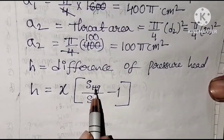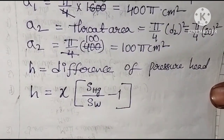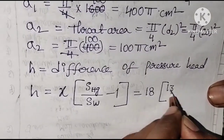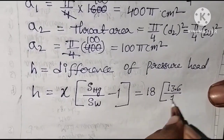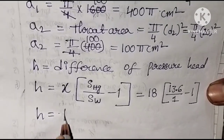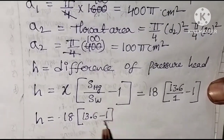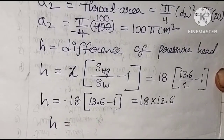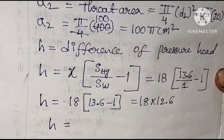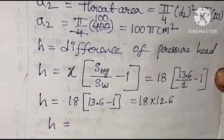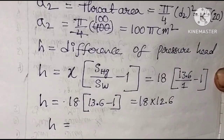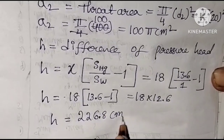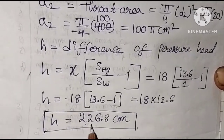Since we are using a heavier liquid than the working fluid, H = X × (S_Hg / S_W − 1). With X = 18 cm, specific gravity of mercury = 13.6, and specific gravity of water = 1: H = 18 × (13.6 − 1) = 18 × 12.6 = 226.8 cm. So the difference of pressure head is 226.8 cm.